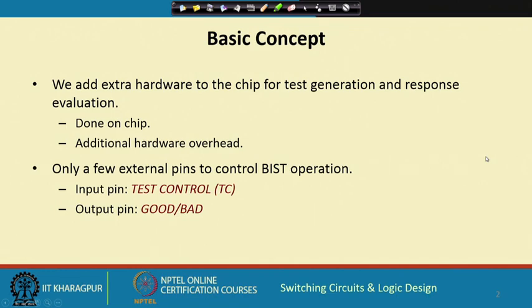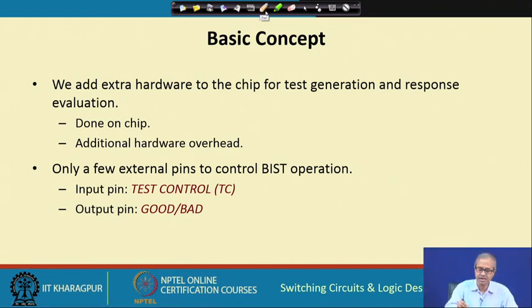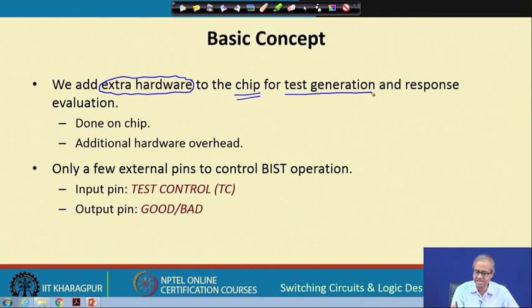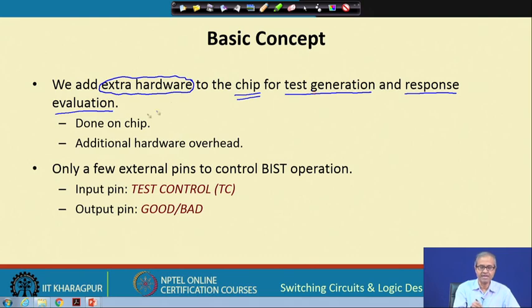Let us first try to understand the basic concept. We want to test a chip — some circuit which is there in the chip. The first important thing to note is that we put some extra hardware in the chip, and this extra hardware will have two responsibilities. First, it will automatically be generating some test vectors, and it will be evaluating the responses of the circuit. Both these things will be carried out by the extra hardware. From outside, we need not apply any test vectors, and on the outside we do not have to evaluate the circuit responses. Everything will happen inside, within the chip.